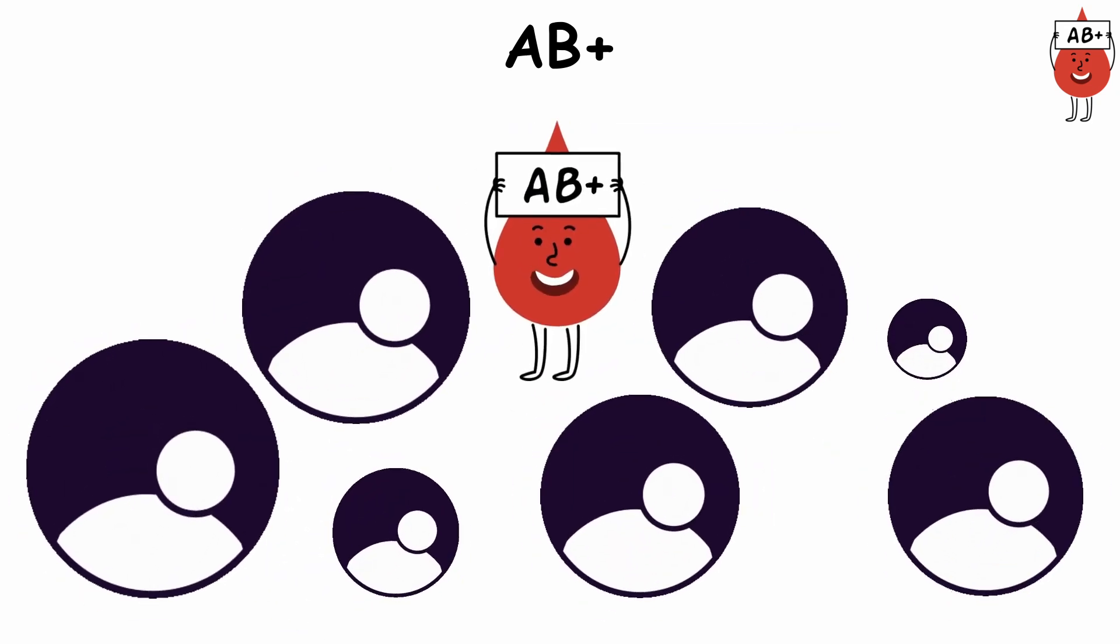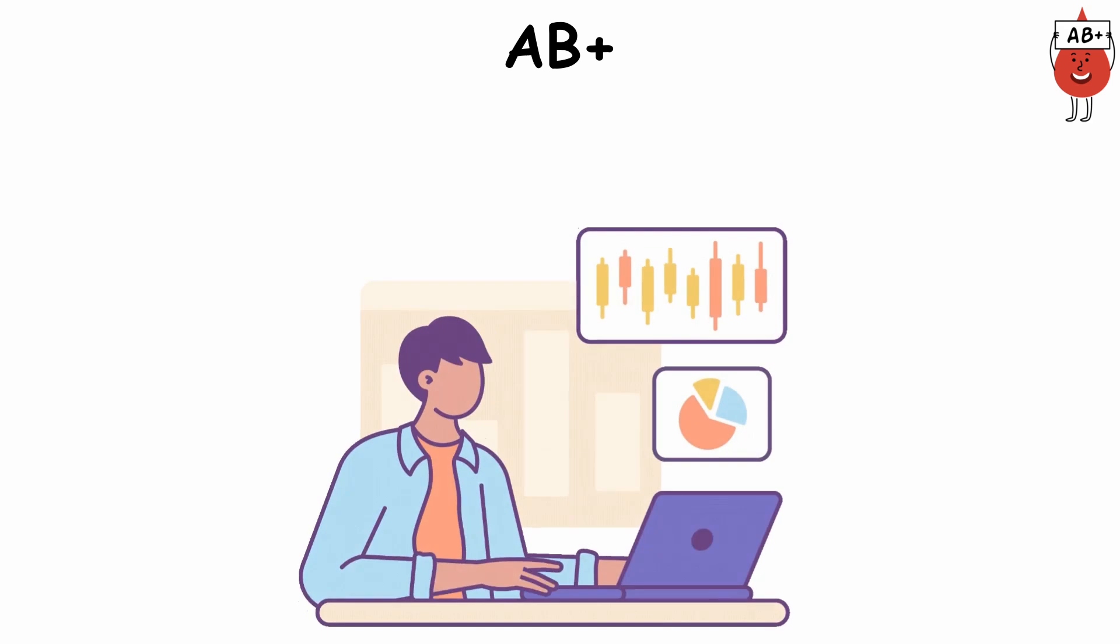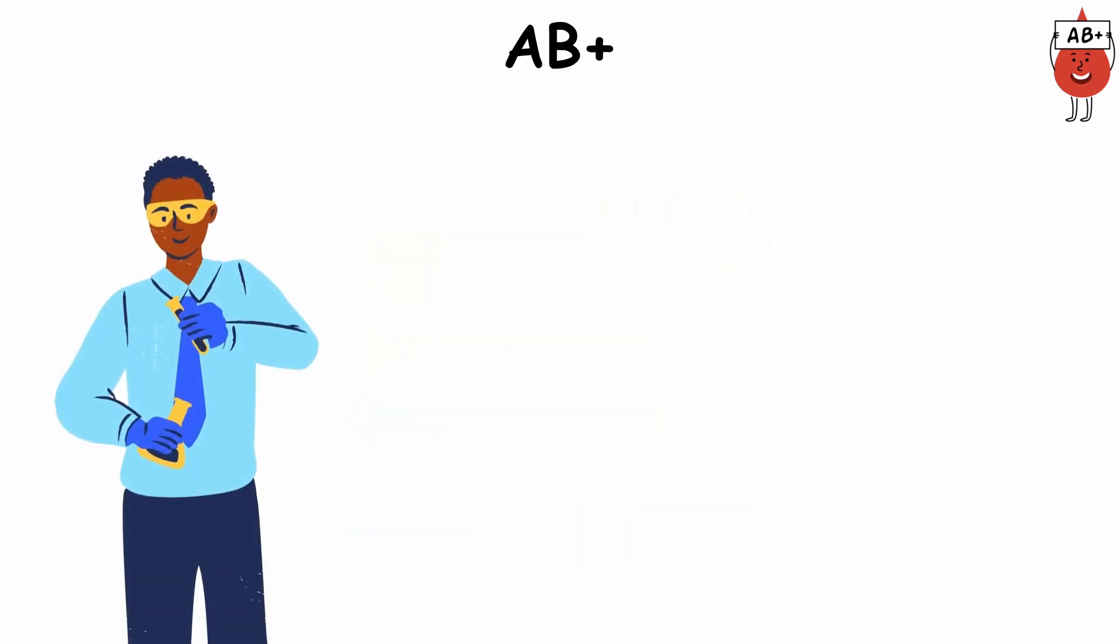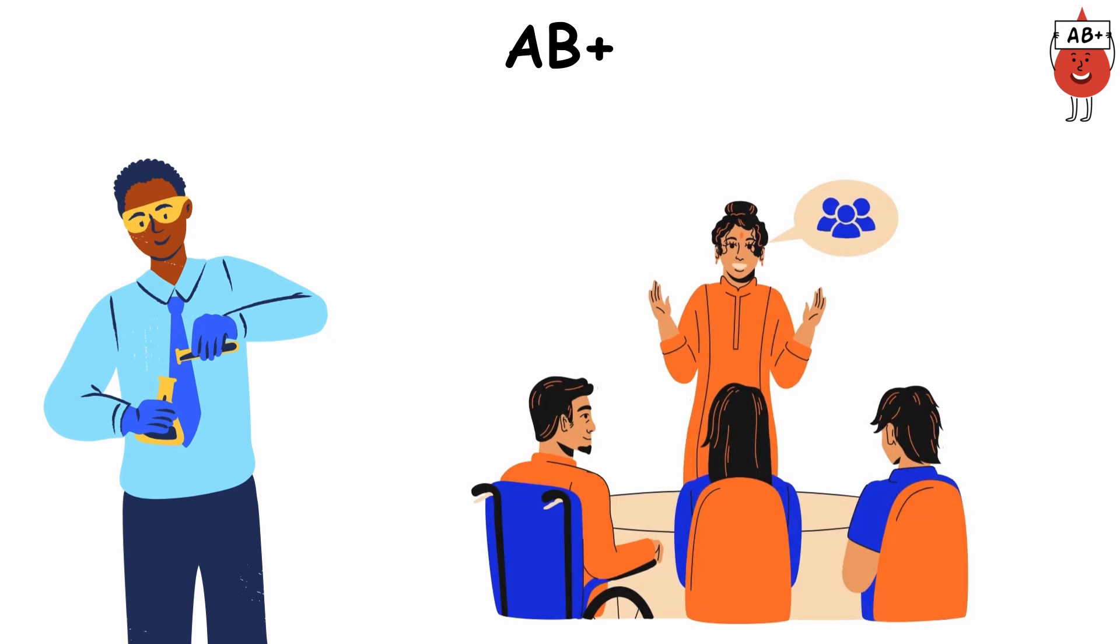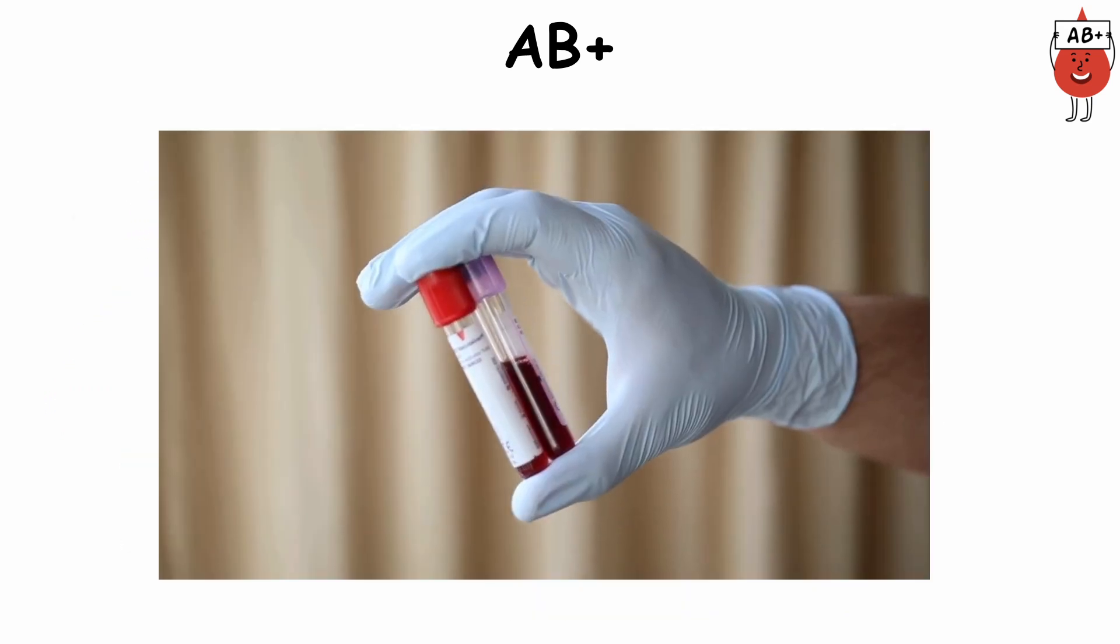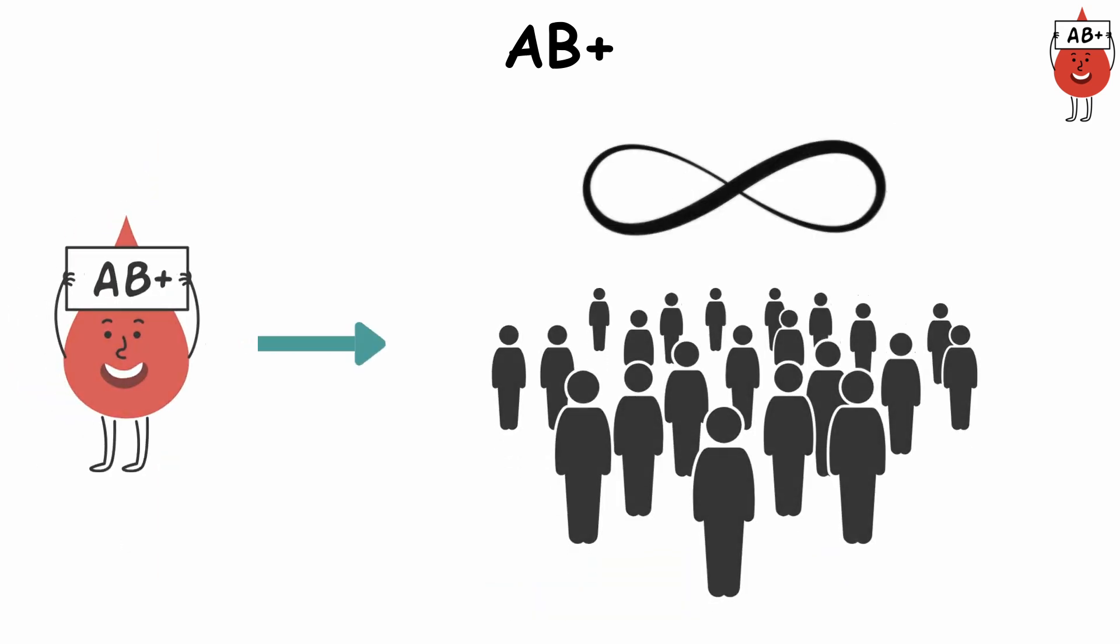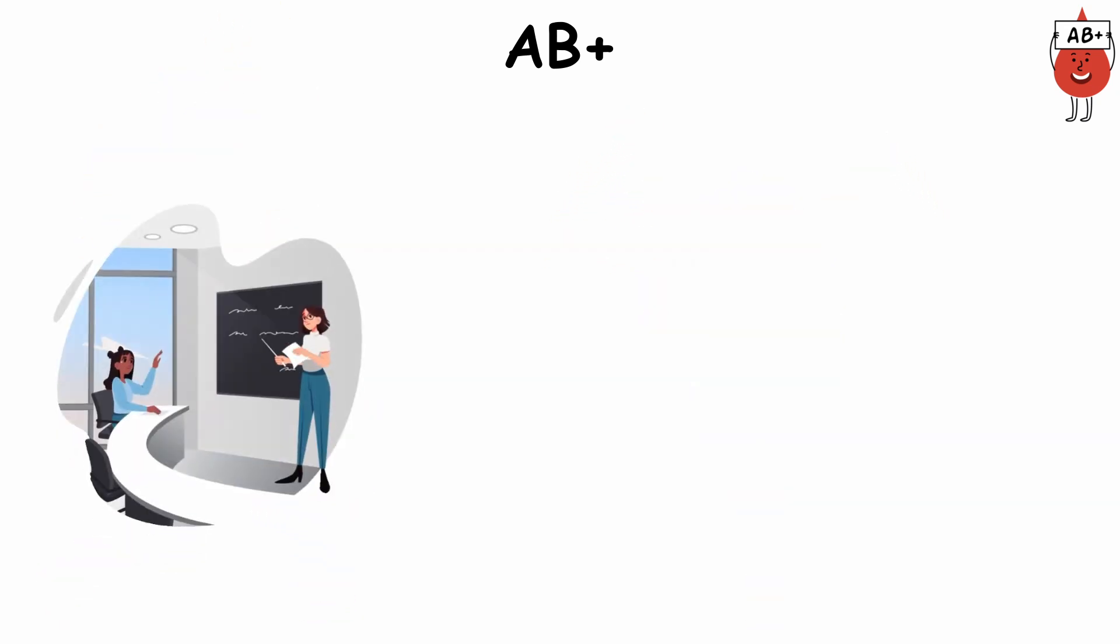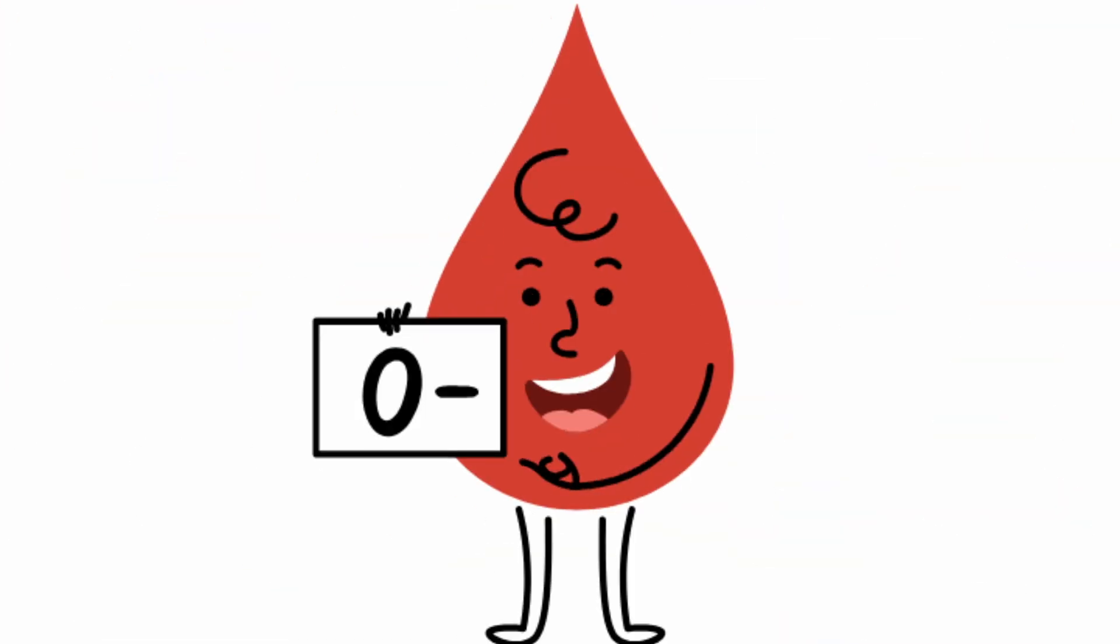Many AB-positive people have faster reaction times and can keep their attention better when they are doing complicated tasks. Carriers often handle stress better and demonstrate natural leadership qualities. This blood type quietly gives people a continuous, built-in advantage in staying strong and healthy from the classroom to the sports field.